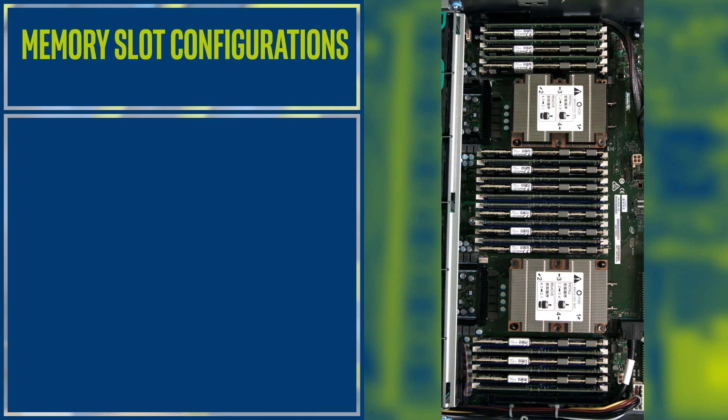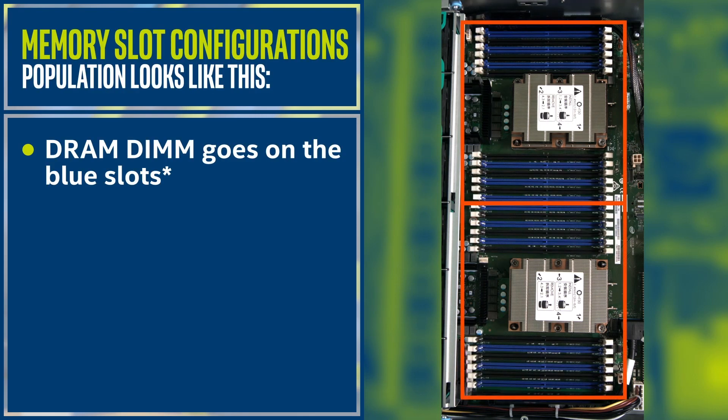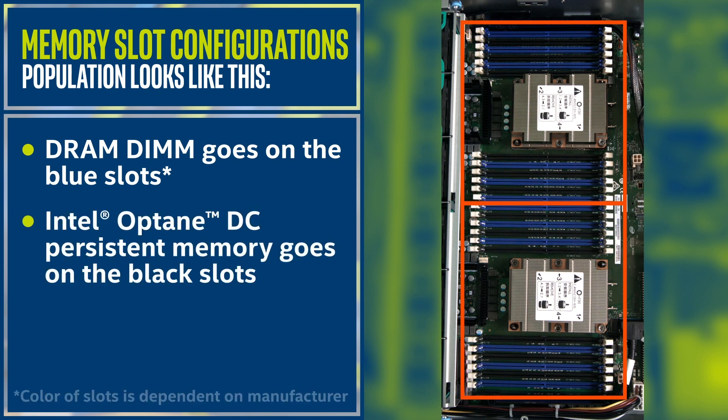In the actual platform, the population looks like this. I've placed a DRAM DIMM in the appropriate slot of each channel, which are the blue slots. The Optane Persistent Memory Modules go on the black slots on each channel. Keep in mind that the color will depend on your server manufacturer.